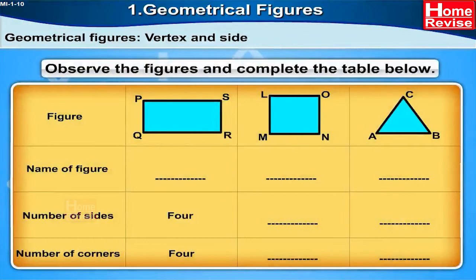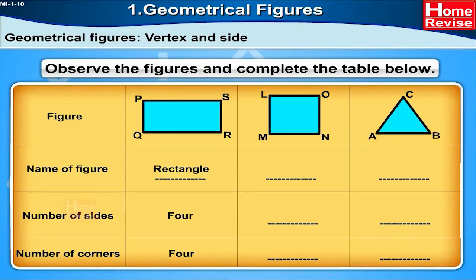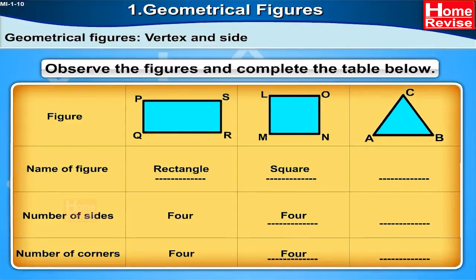Now observe the geometrical figures and complete the table. The first figure is a rectangle — number of sides: four, number of corners: four. The next figure is a square — number of sides: four, number of corners: four. The next figure is a triangle — number of sides: three, number of corners: three.